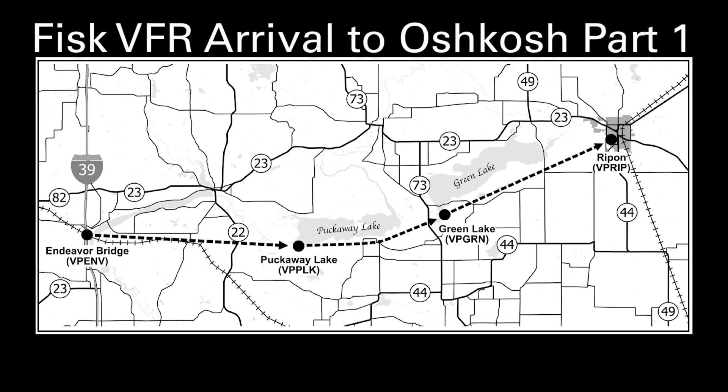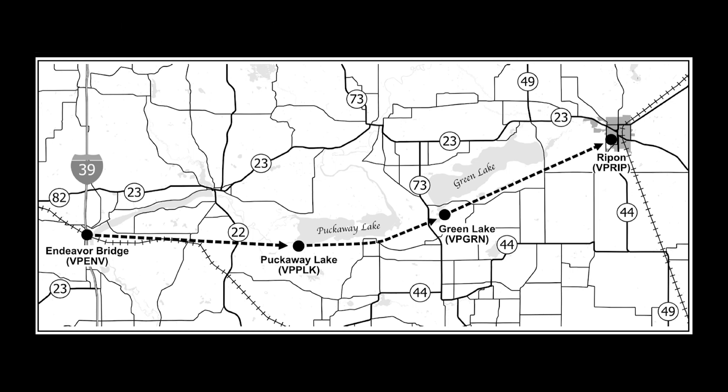The VFR arrival to AirVenture starts at one of the FAA-designated reporting points shown on this map from the AirVenture NOTAM, and continues to the town of Ripon for the rest of the VFR arrival procedure. When planning your flight, you won't know which transition starting point will be in use when you arrive, so this video will show the route from each of the starting points. You should be familiar with them all.